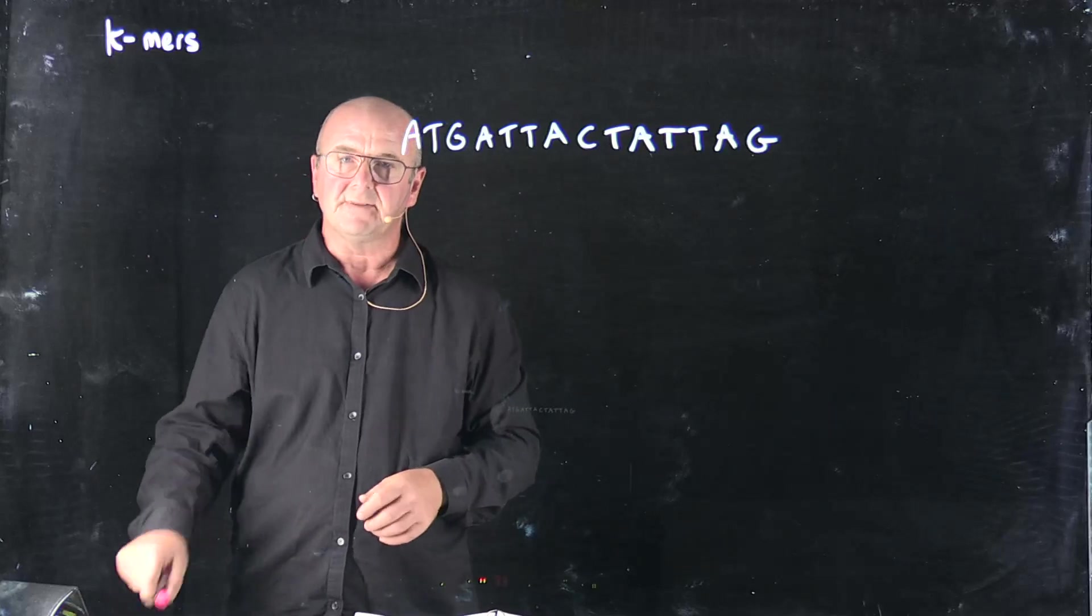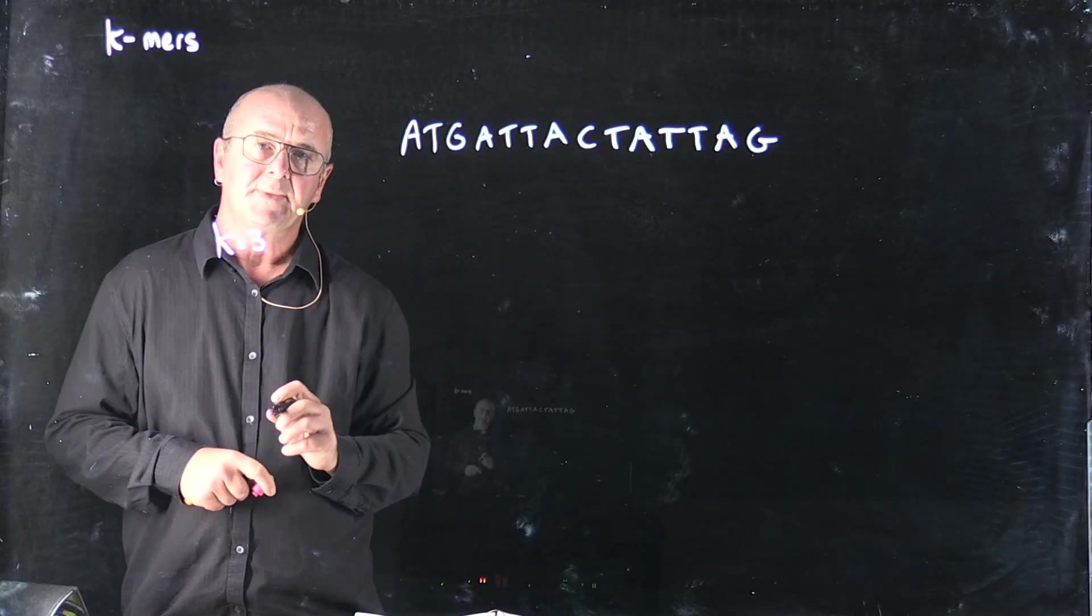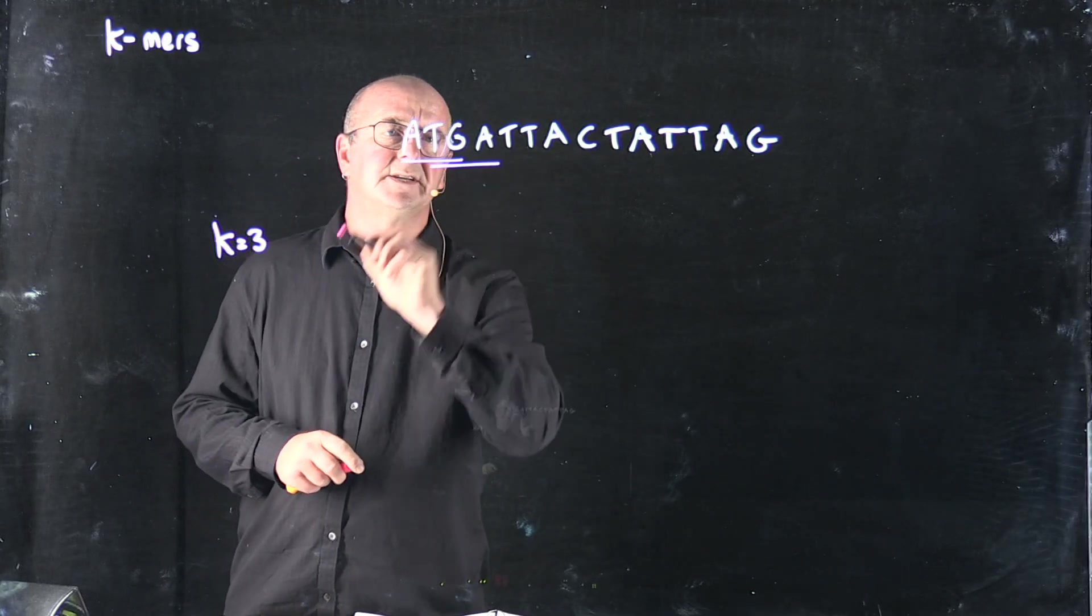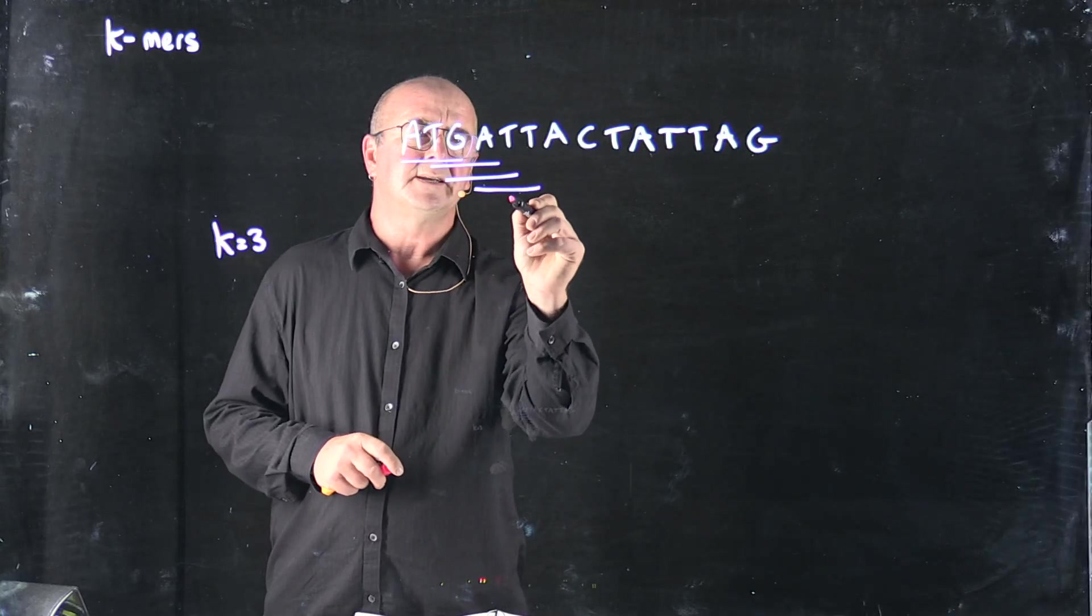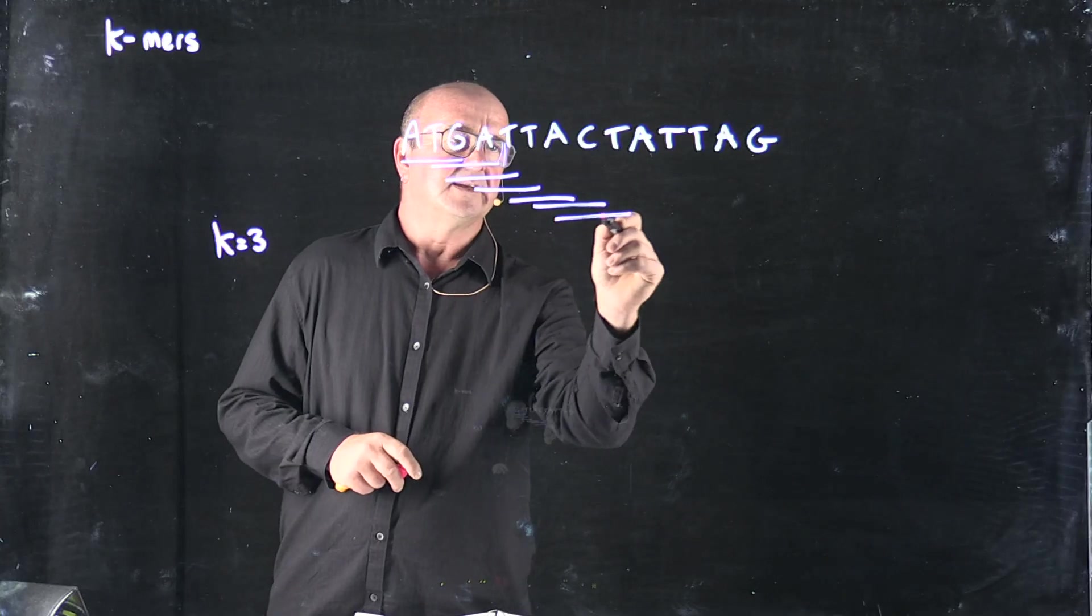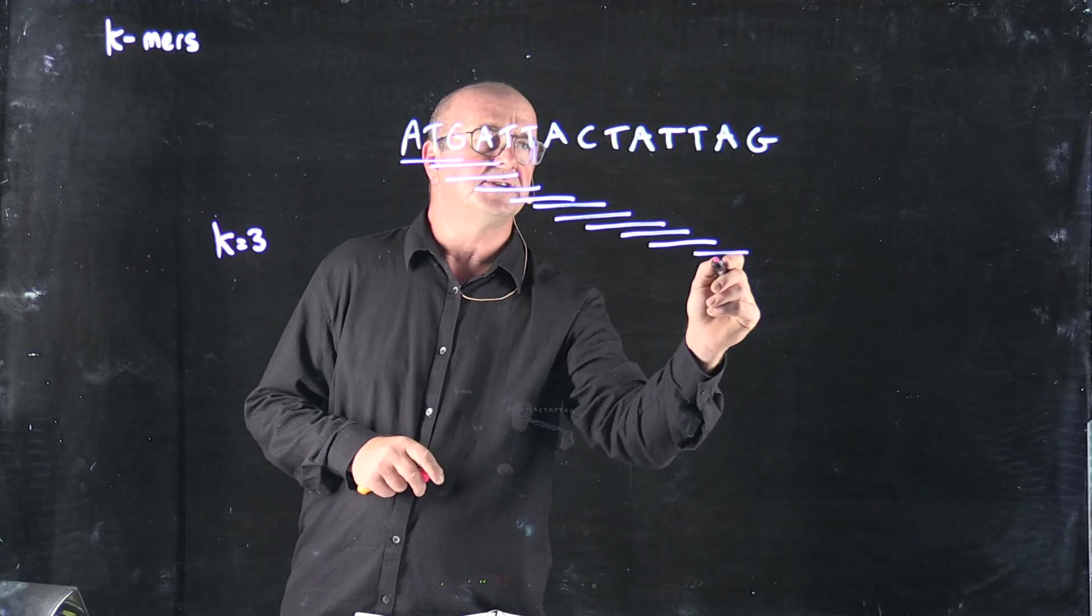If I set K equal to, let's say, 3, then I've got a K-mer ATG, a K-mer TGA, a K-mer GAT, a K-mer ATT, a K-mer TTA, a K-mer TAC, ACT, CTA, TAT, ATT, TAG, and that's the end of my K-mers.